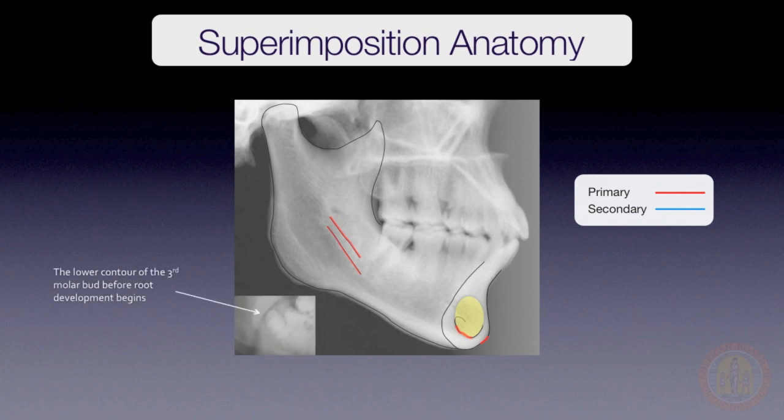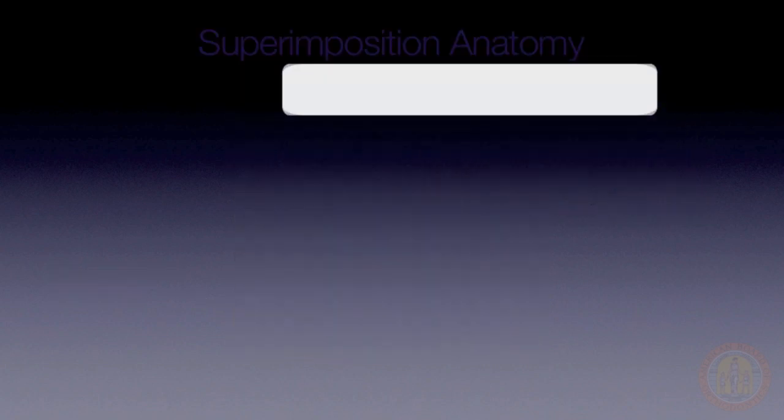Before root development begins, the lower contour of a mineralized tooth germ provides a secondary structure that can be superimposed upon. The pre-treatment and post-treatment tracings of the mandible are superimposed in the following manner: horizontally or sagittally, the tracings are first oriented by the anterior contour of the chin.